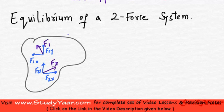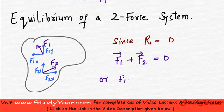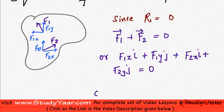Since this body is in equilibrium, we must have the resultant equal to 0. So, since R is equal to 0, what do we have? We have F1 plus F2 is equal to 0. Or we have F1,X i plus F1,Y j plus, this is your F1 force vector, plus F2,X i plus F2,Y j is equal to 0. Or we can write...